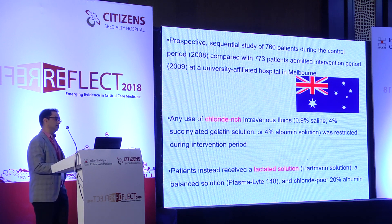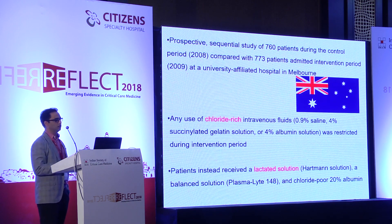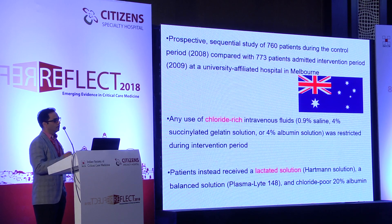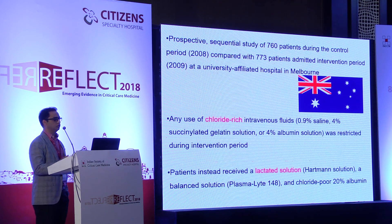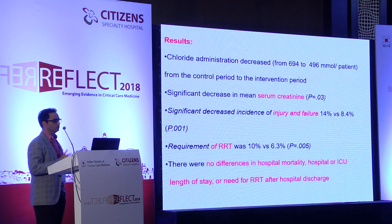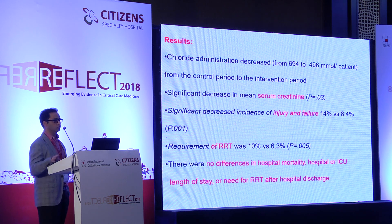This was a prospective sequential study — two consecutive years. In 2008, around 760 patients were studied against around 770 patients in 2009. One year they used chloride-rich fluid and one year chloride-restricted fluid. Any use of chloride-rich IV fluid — 0.9% saline, succinylated gelatin, 4% albumin — was restricted during the intervention period. Patients instead received a lactated solution, either Hartmann's or balanced solution like Plasmalyte 148, and salt-poor 20% albumin. The result: chloride administration decreased significantly. There was a significant decrease in serum creatinine and in renal injury and failure. Requirement of RRT also came down significantly with the chloride-restricted strategy.